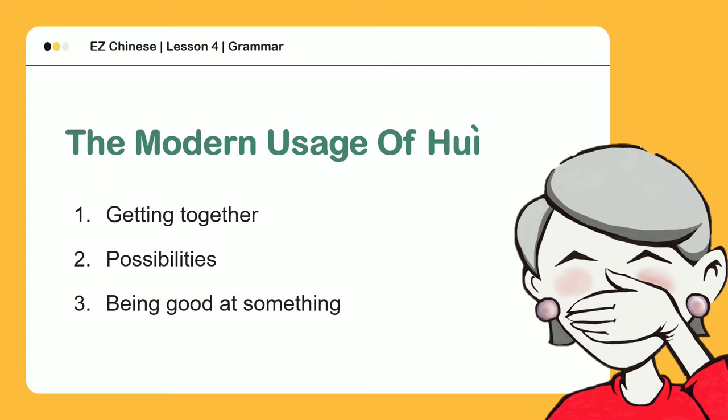The modern usage of Hui: 1. Getting together. 2. Possibilities. 3. Being good at something.